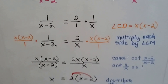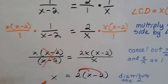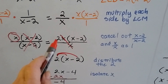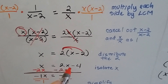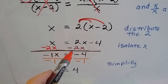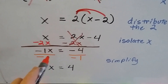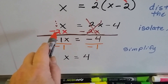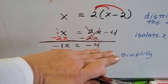Now we can cancel out (x minus 2) over (x minus 2) because it becomes 1, leaving just x on the left side. On the right, the x cancels out and we're left with 2 times (x minus 2). Distributing the 2 gives us 2x minus 4. Now we need to isolate x. There's a 2x on one side and x on the other, so we subtract 2x. With an invisible coefficient of 1 on x, taking away 2 gives negative x equals negative 4.